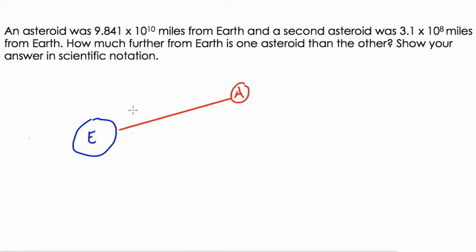So we're dealing with 9.841 times 10 to the 10th. That's our distance, and that's in miles. And then we have another asteroid. We don't know exactly where it is, but we know that it's not as far as 3.1 times 10 to the 8th. So I'll just draw it here, a little bit larger. We don't know how big it is.